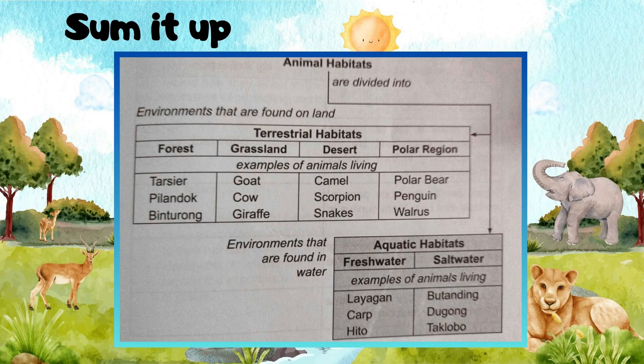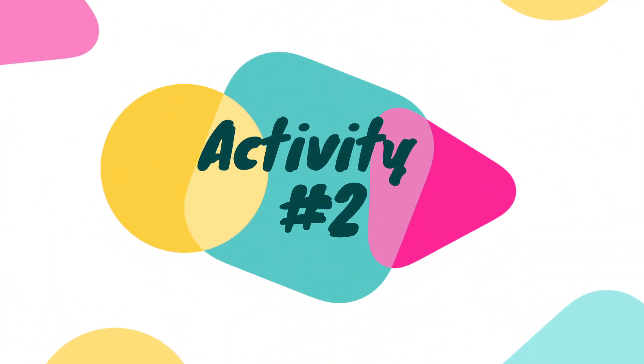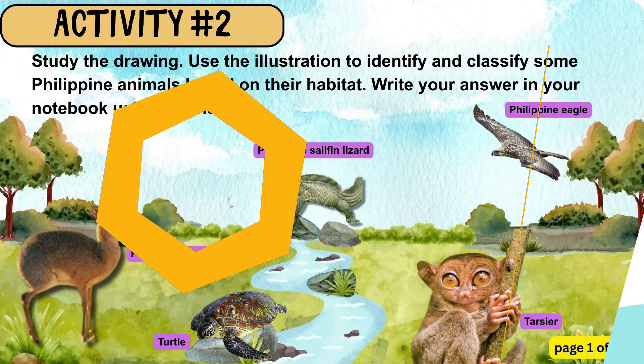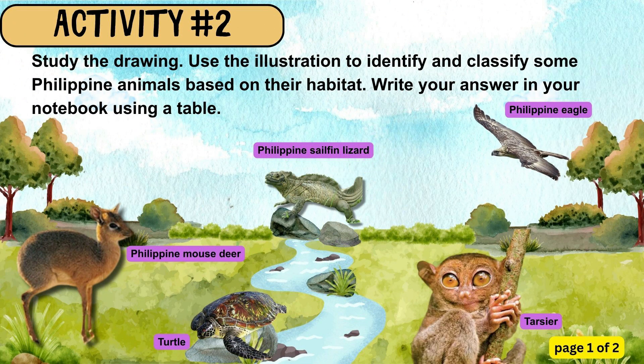All right, kids, let's check out the diagram below. This will help us see the summary of what we learned in today's lesson. For activity number two, study the drawing and use the illustration to identify and classify some Philippine animals based on their habitat. Write your answer in your notebook using a table.